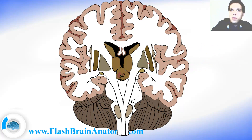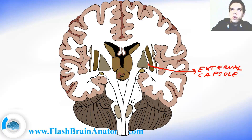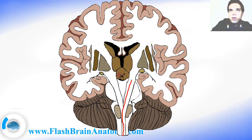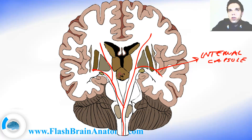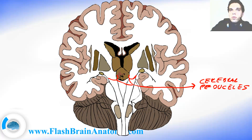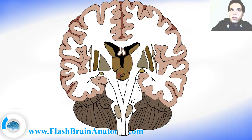Then we had the external capsule over here, between the putamen and the pallidum. And we also had the extreme capsule over here, between the claustrum and the putamen. Of course, we may not forget to write down the internal capsule over here, going on both sides — that is very important. Then we had these two parts over here called the cerebral peduncles, and right between these two we had the interpeduncular fossa.